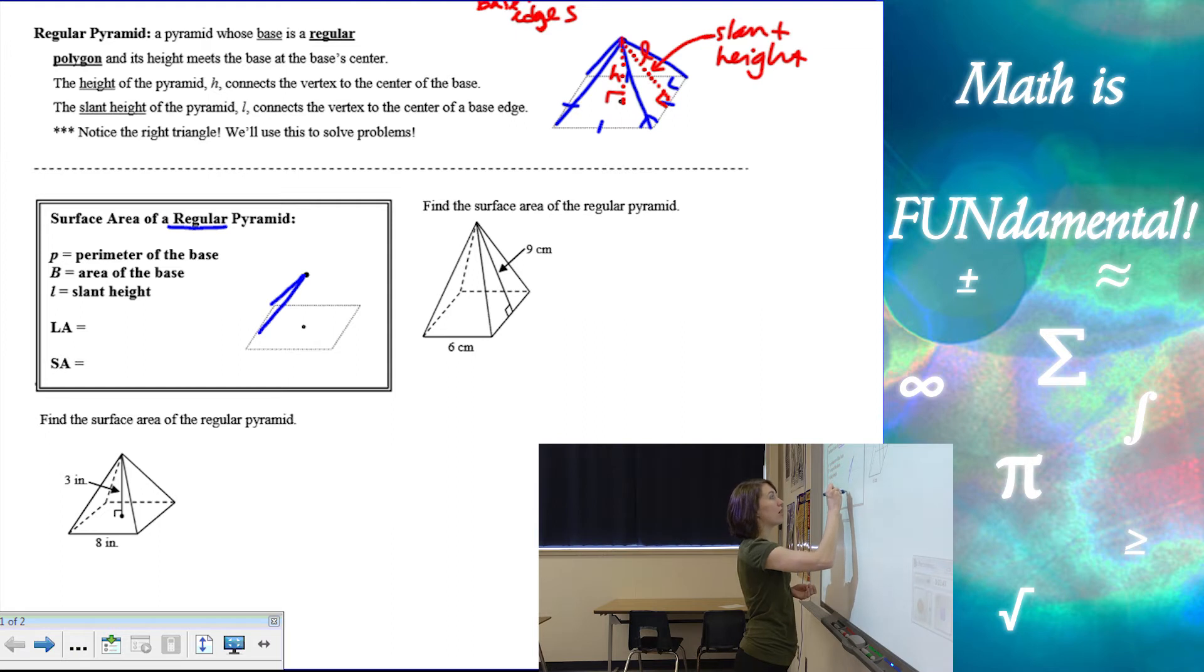Let's draw our regular pyramid here. We know that we have all of our pieces. We have our height, H, goes from the top down to the center, and our slant height, L, goes perpendicular to a base edge, not the center.